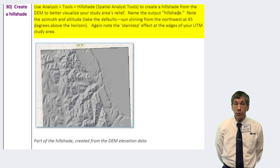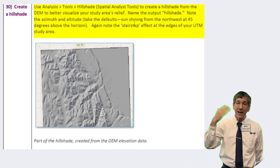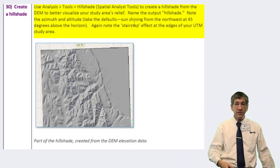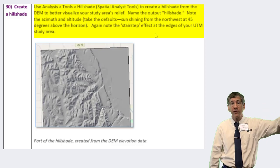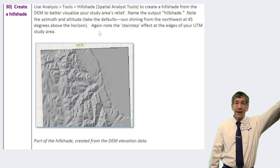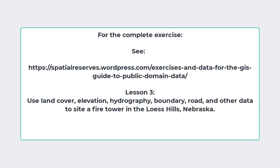Name the output Hill Shade. Note the azimuth and the altitude — take the defaults. The Sun in the defaults is shining from the northwest at a 45-degree angle above the horizon. Next, we'll look at the Raster Calculator in ArcGIS Pro.